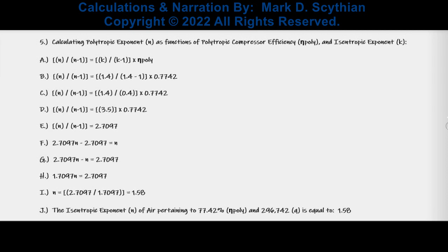We then compute the polytropic exponent N, starting with the equation in 5A, followed by algebraic and substitution iterations, yielding 1.58 as the N value — the polytropic exponent — which is a function of the polytropic compressor efficiency calculated earlier.